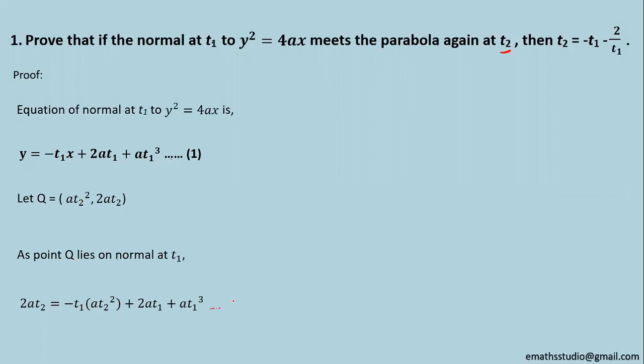Now this I got from equation number 1. In the next step I am taking this 2at₁ to left hand side. So you got it as 2at₂ - 2at₁ = -t₁ · at₂² + at₁³. Further on left hand side we are taking 2a common and on right hand side we are taking at₁ common. So it becomes 2a(t₂ - t₁) = at₁(t₁² - t₂²).